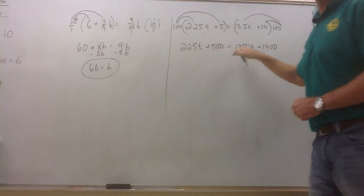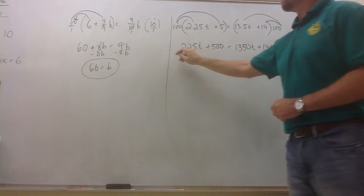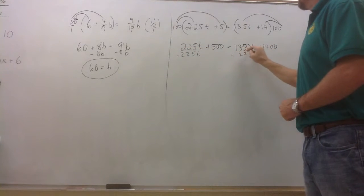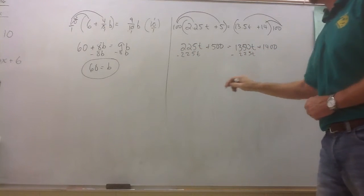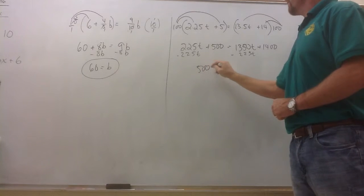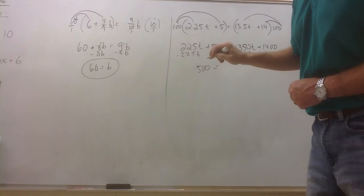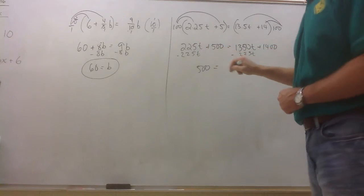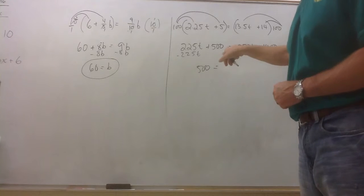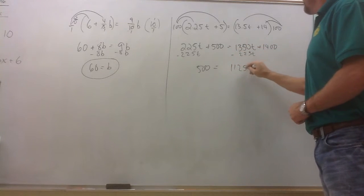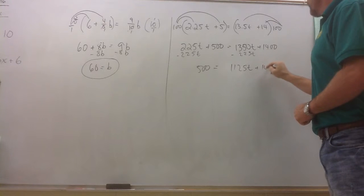We still have a variable on both sides of this equation, so we're going to move the one that's got the least coefficient, which is the 225t's. Leads you with 500 equals, what do we got here? 13.50 minus 225. That's going to give me 11.25t plus 1,400.